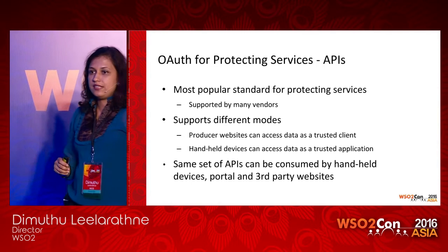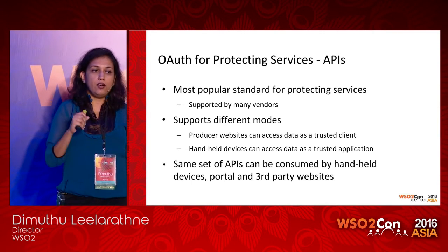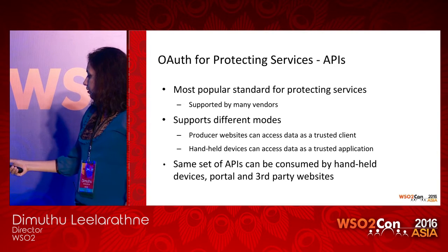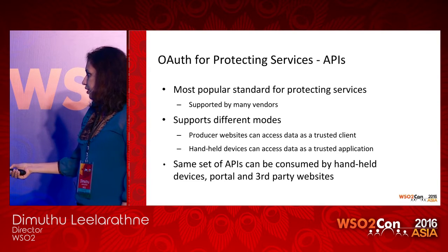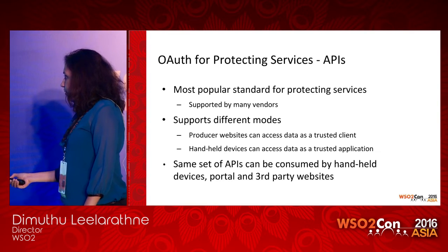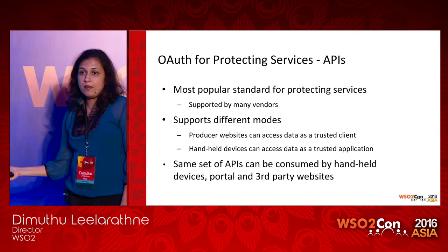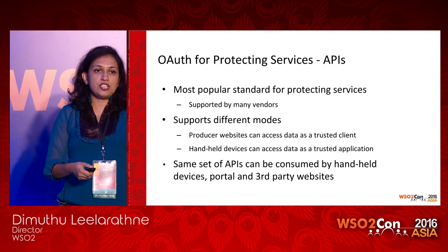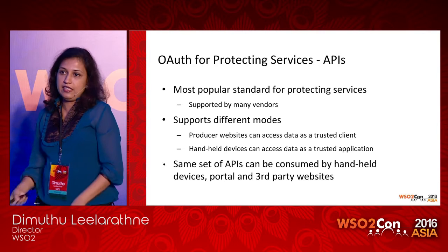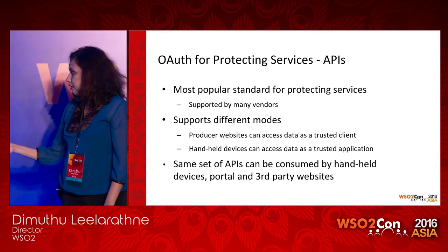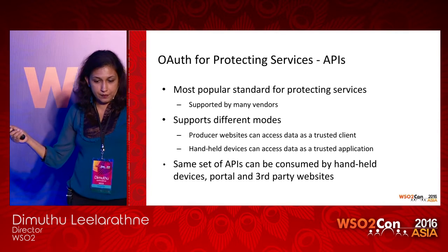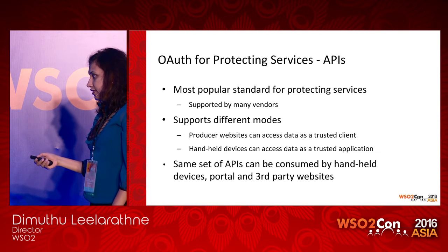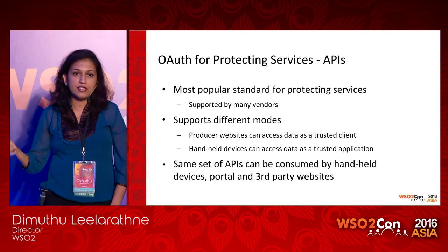He decides to use OAuth for protecting these APIs, as it's the most popular standard for exposing industry-grade APIs. He uses two types of OAuth grant types: one to access data as a trusted client, for producer websites; and another to access data as a trusted application on behalf of the user, for employees issuing goods. Because of OAuth, the same set of APIs can be consumed by handheld devices, the in-house portal, and third-party applications with different levels of authorization.